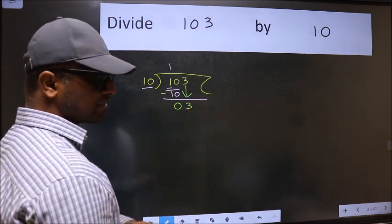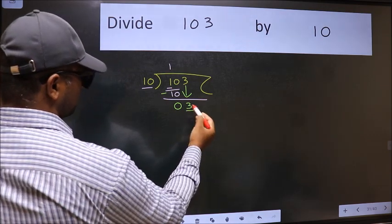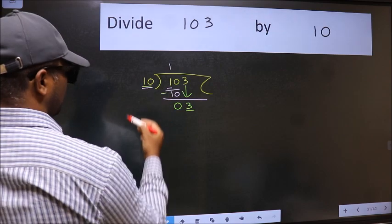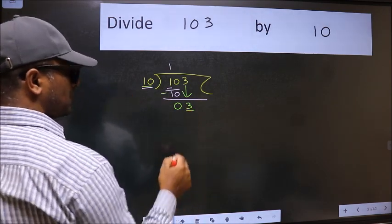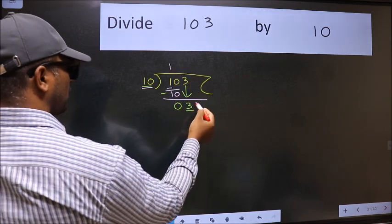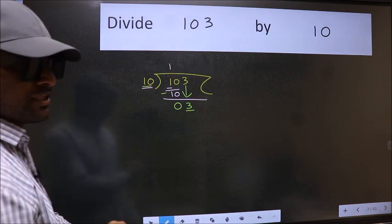After this step, the mistake happens. And the mistake is this: here we have 3 and here 10. 3 is smaller than 10. So what many do is, they directly put dot, take 0. Which is wrong.